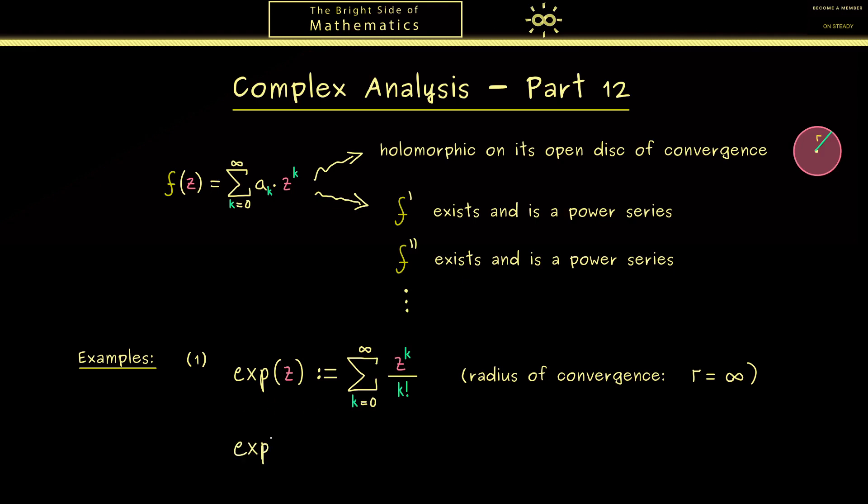So we know that the derivative of the exponential function exists everywhere and we can calculate it. We simply can do this in the series term by term. Hence here k comes in front and we reduce the power by 1. So you see this is not complicated at all. However, please don't forget k equals 0 corresponds to the constant term which always vanishes for the derivative. In other words, the new series now should start with 1.